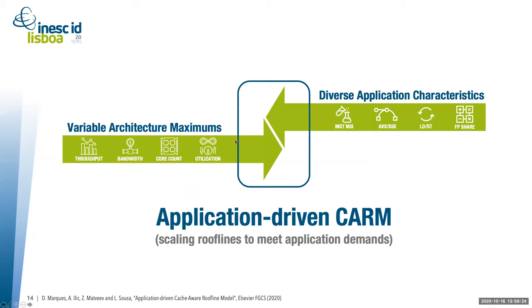We realized that nowadays applications are not as straightforward as matrix multiplication. They might have different instruction mixes, mixing vector instructions such as AVX and SSE, scalars, different load/store ratios, or different FP shares. This hinted that presenting absolute maximums for the roofline might not be adequate for every type of application, especially if an application cannot exploit those architecture maximums.